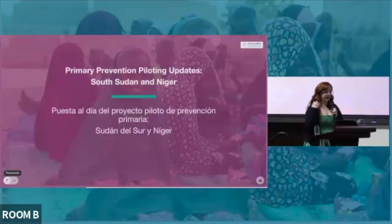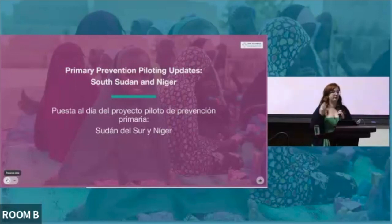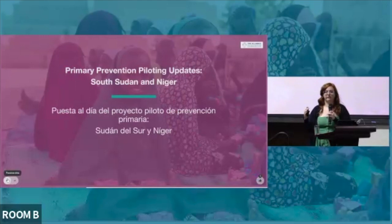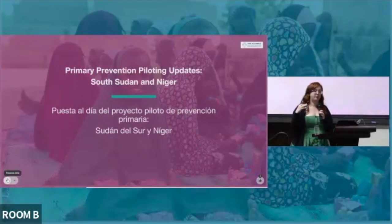So we have our Primary Prevention Framework, developed in an inter-agency manner with lots of inputs from across child protection actors. But the next step was to test it — we need to generate evidence about the effectiveness and the impact of the primary prevention framework and of taking primary preventive approaches.